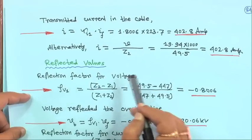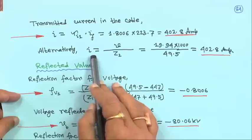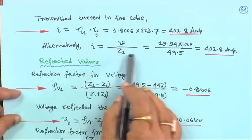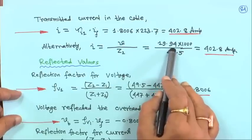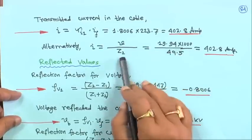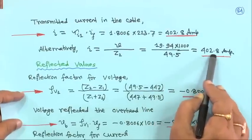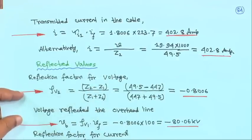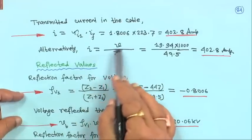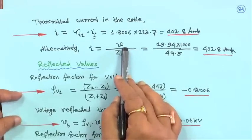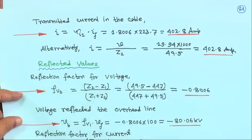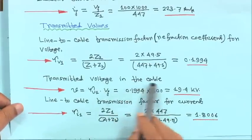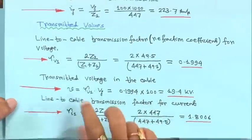Alternatively, for checking: current I equals V upon Z2. The refracted voltage is 19.94 kV, so dividing 19,940 by 49.5 gives 402.8 amperes — the same result. Both methods give identical answers for the transmitted current.